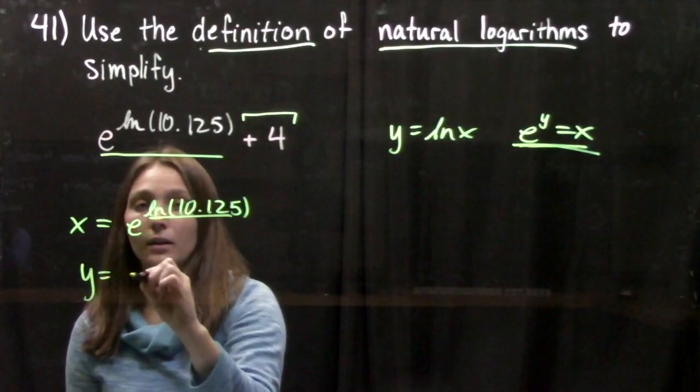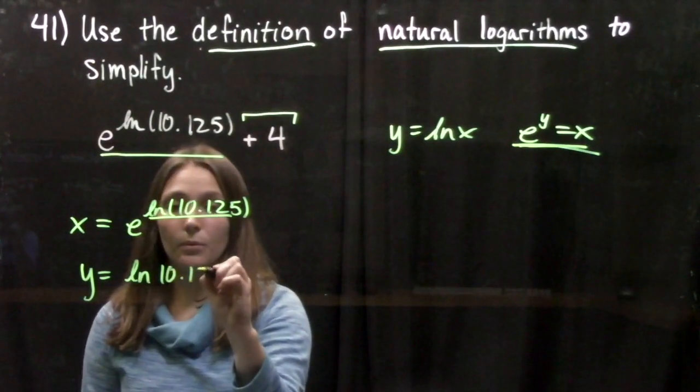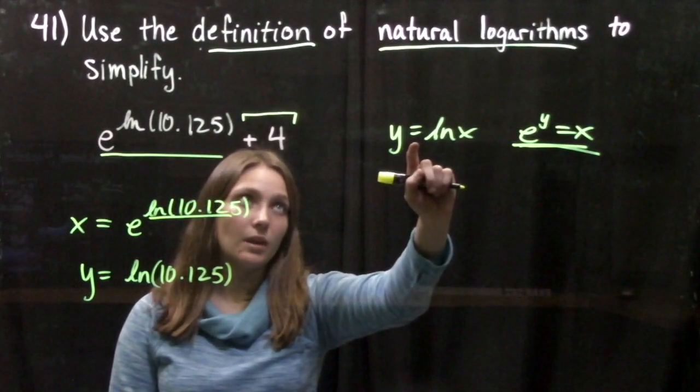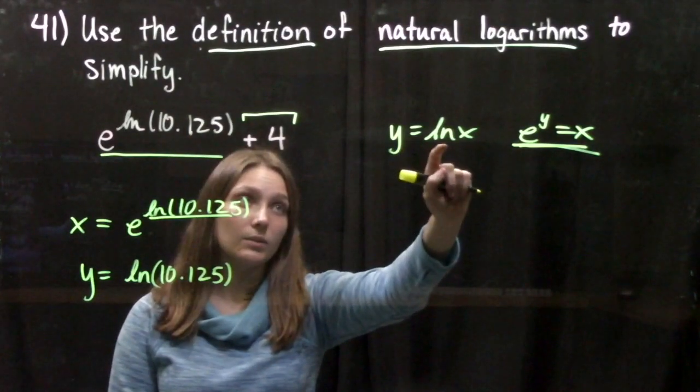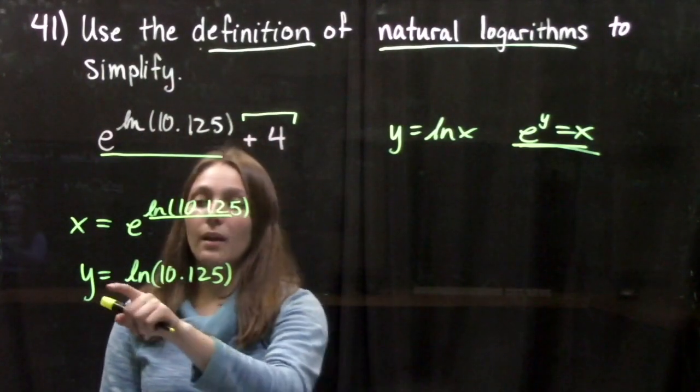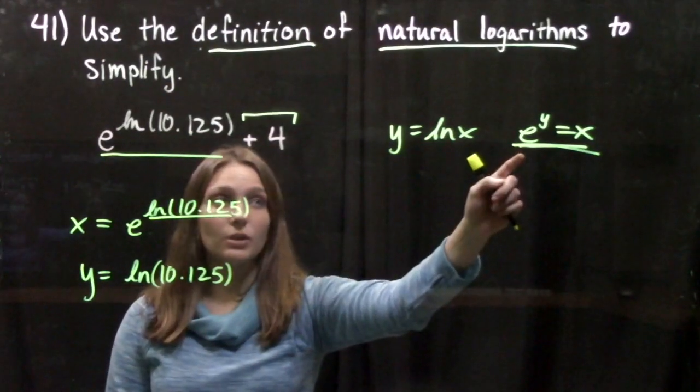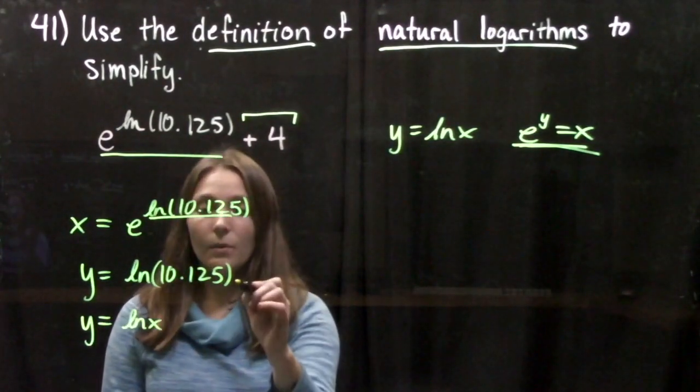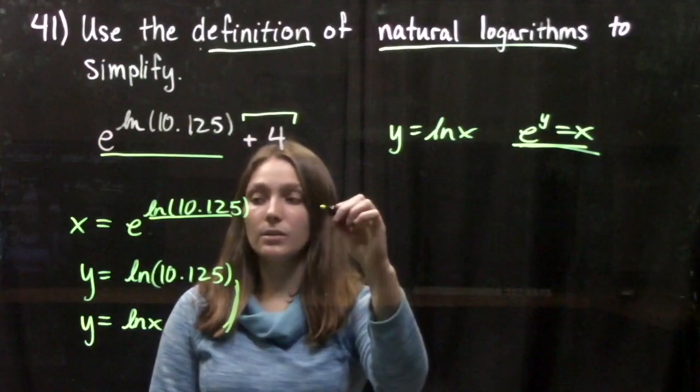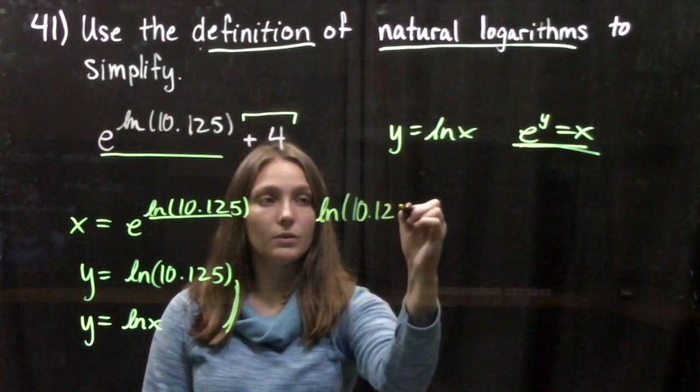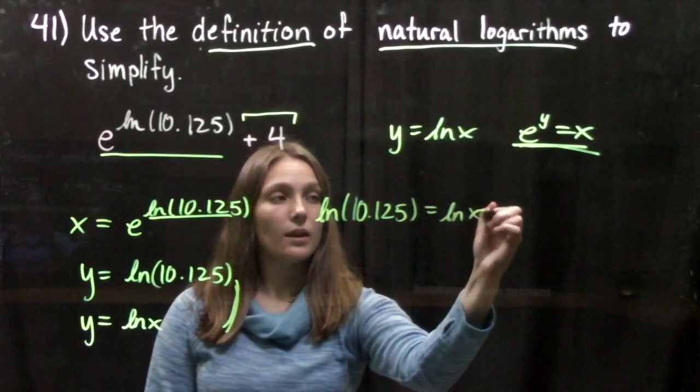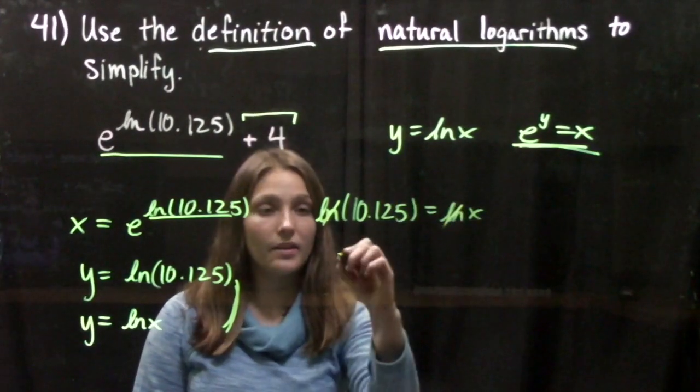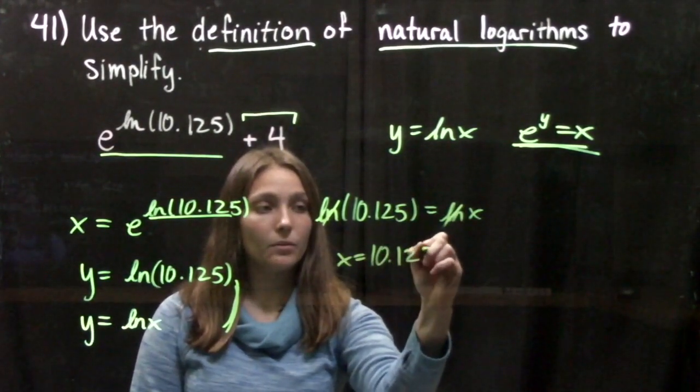So we can say y equals the natural log of 10.125. Now we can use the second portion of this definition of natural logarithms which says y equals the natural log of x. So we have this from using this equation, and now we're going to write y equals the natural log of x. Now what we can do is set these two equal to each other since they're both y. So we get the natural log of 10.125 equals the natural log of x, and we notice that we have natural logs in front of both of them, so we can cancel them out. And then we get x equals 10.125.